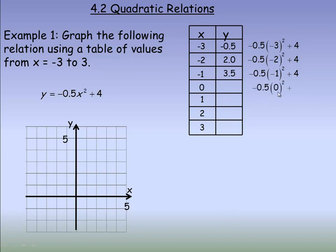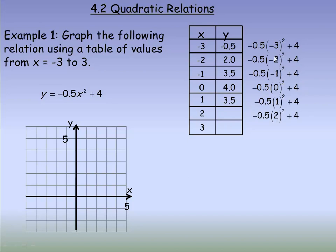For x equals 0, 0 squared is 0, times negative 0.5 is still 0, plus 4 gives you 4. For x equals 1, 1 squared is the same as negative 1 squared, so the y value is the same as for negative 1 — you get 3.5 again. Similarly, 2 squared and negative 2 squared are the same, so those y values match. And 3 squared and negative 3 squared are both 9, so that y value is also negative 0.5.